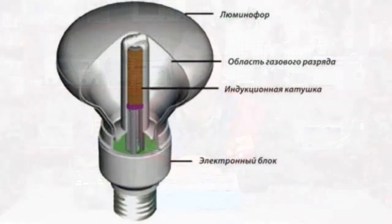This considerably extends their lifetime. The induction lamp includes three basic components: a gas discharge tube with a phosphor-coated inner surface, a magnetic ring or induction collar rod, and a high-frequency carrying oscillator.